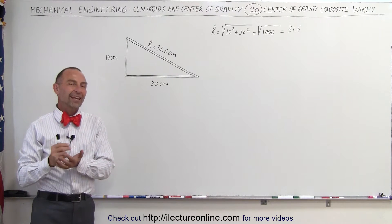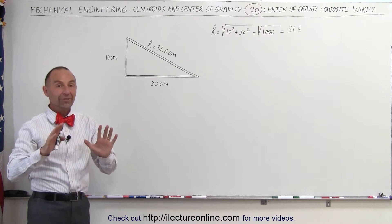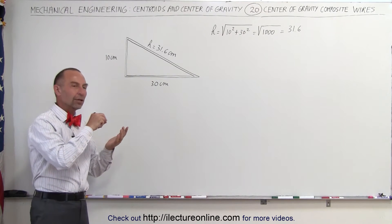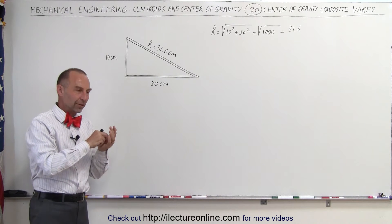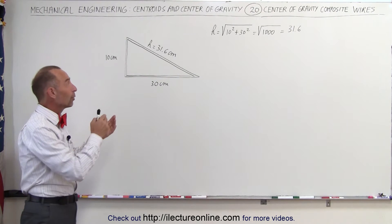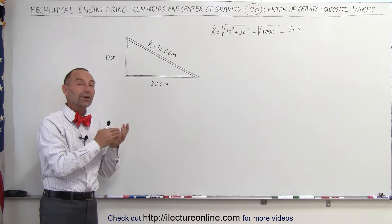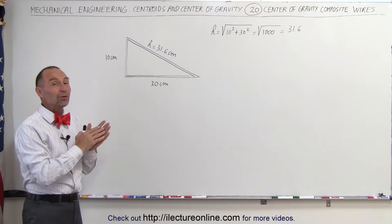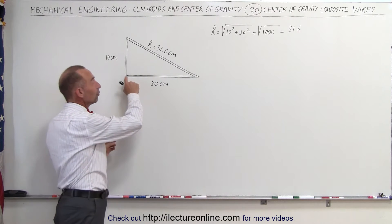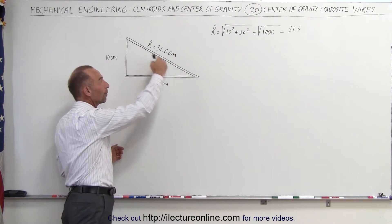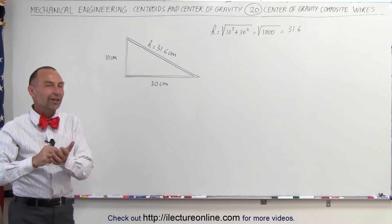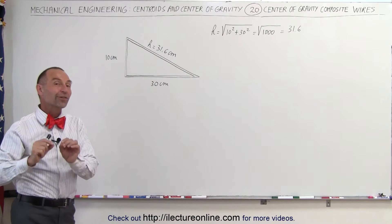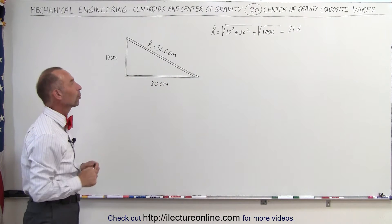We're going to use the very same methodologies we do for plates. Instead of multiplying the coordinates of each element by the area, here we're going to multiply the coordinate of each wire by the length of each wire. We do that because we assume the wires have uniform density and uniform thickness, so the mass per unit length remains the same throughout the entire wire. Therefore, it's better to use length than mass because it's easier to work with.